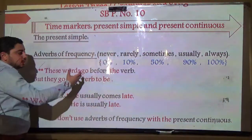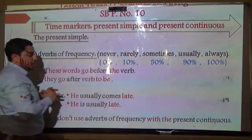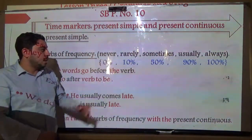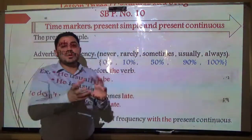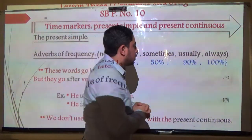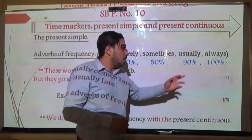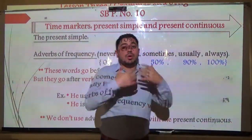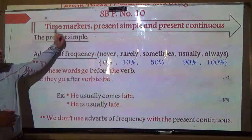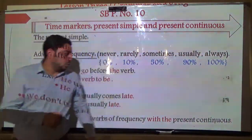Never represents 0% — it never happens. Rarely means very few times, about 10%. Sometimes means 50%, half of the time. Usually means 90%, most of the time. Always means 100%, all the time or nearly all the time.